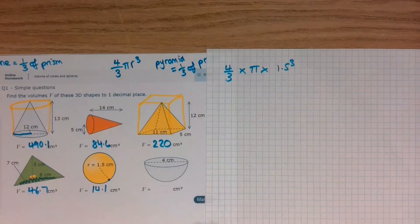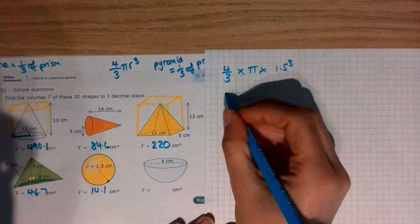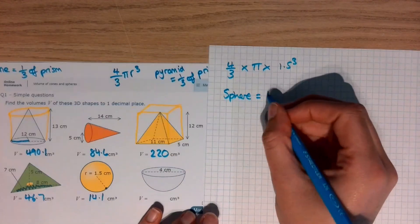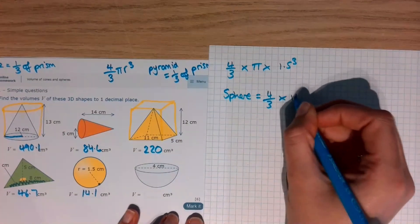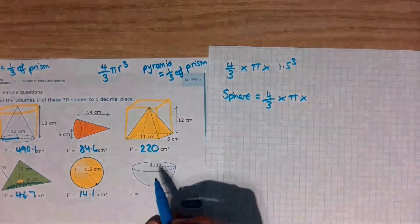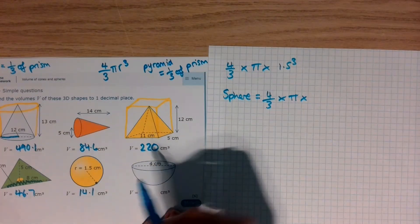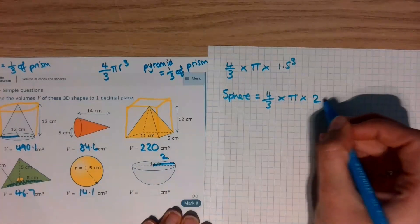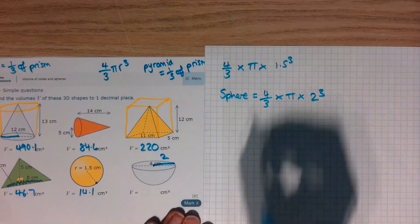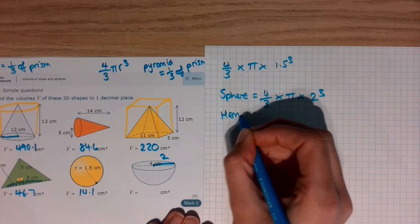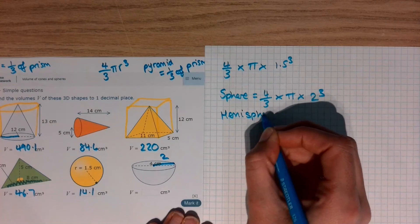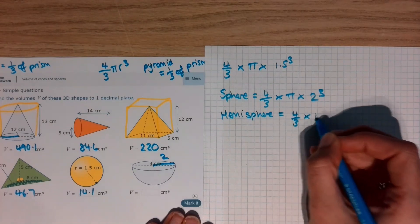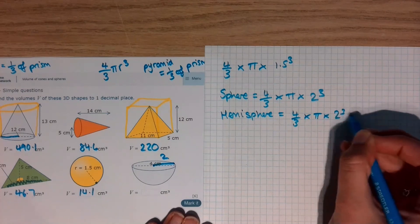So, now this is a hemisphere. It is not a sphere. Let's pretend it's a whole sphere. So if it was a whole sphere, it would be 4 thirds times by pi times by the radius cubed. What's the radius of this hemisphere? Radius, middle, the outside. 2. 2 cubed. That would be the whole sphere. Do I want the whole sphere? No, I do not. I want a hemisphere. Which means I'm going to do my 4 thirds. I'm going to times it by pi. I'm going to times it by 2 cubed. And then I'm going to half it.